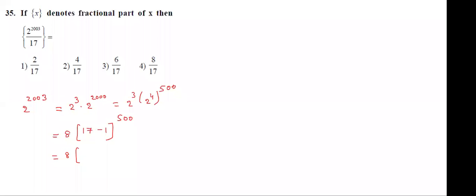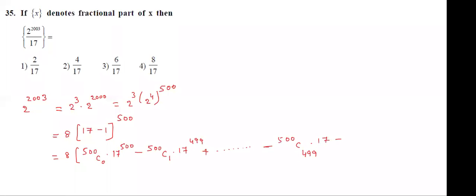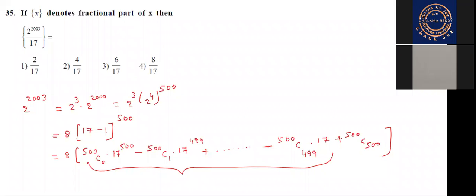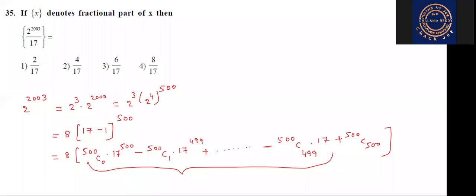Students, expand this: 500C0 into 17 power 500 minus 500C1 into 17 power 499, and so on, minus 500C499, and so on. Now observe that each and every term has 17. Take 17 common — the remaining part is integer only.